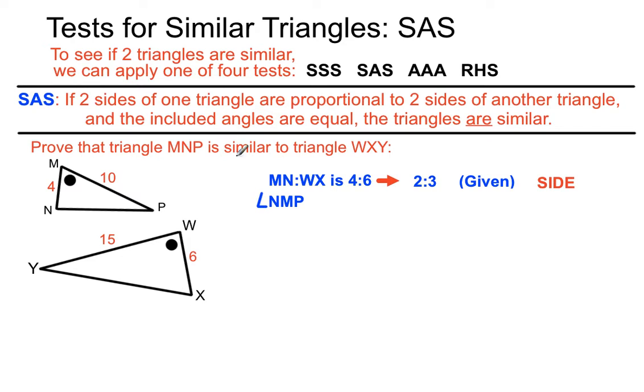Angle NMP, this angle here, is equal to angle XWY, that angle there. So those two angles are the same because they have the same symbol. They are the included angles. They are called included angles because they are angles between the two other sides we are considering. An angle between two sides is called the included angle. So we've made an angle statement, and we've got side and angle.